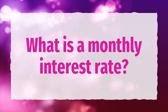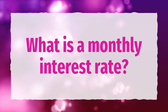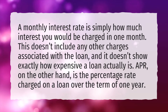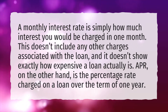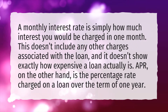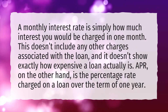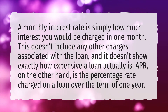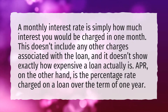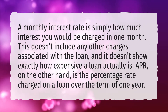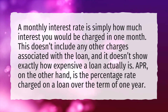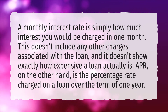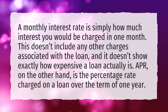What is a monthly interest rate? A monthly interest rate is simply how much interest you would be charged in one month. This doesn't include any other charges associated with the loan, and it doesn't show exactly how expensive a loan actually is. APR, on the other hand, is the percentage rate charged on a loan over the term of one year.